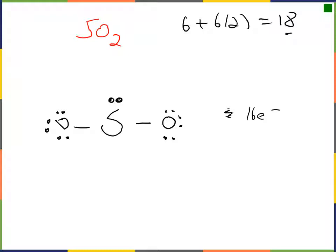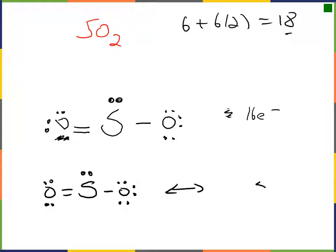We put the two extra electrons on sulfur — not on the oxygens, which already have a complete octet. To give sulfur an octet, we bring in one of those lone pairs as a double bond. This gives an octet on sulfur. Drawing it out, we can get a double bond on one oxygen, or equally we could place the double bond on the other oxygen.